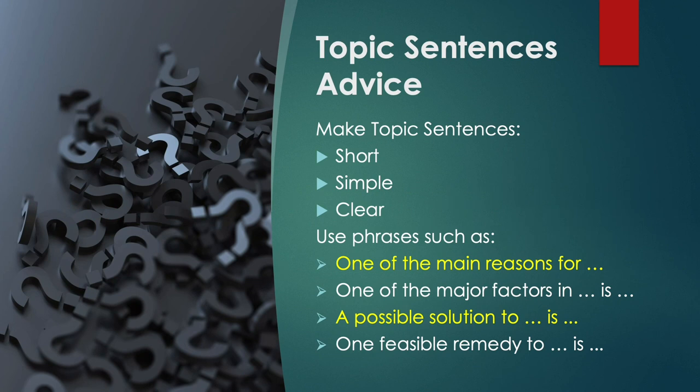Some advice about topic sentences: make them short, simple and clear — make it easy for the reader to understand what you're saying. Use phrases such as these to introduce your topic sentences: 'One of the main reasons for,' 'One of the major factors in,' 'One of the strongest arguments against or in favour of,' 'One of the main advantages or disadvantages of.' These phrases can help you to structure your topic sentence in the essay.